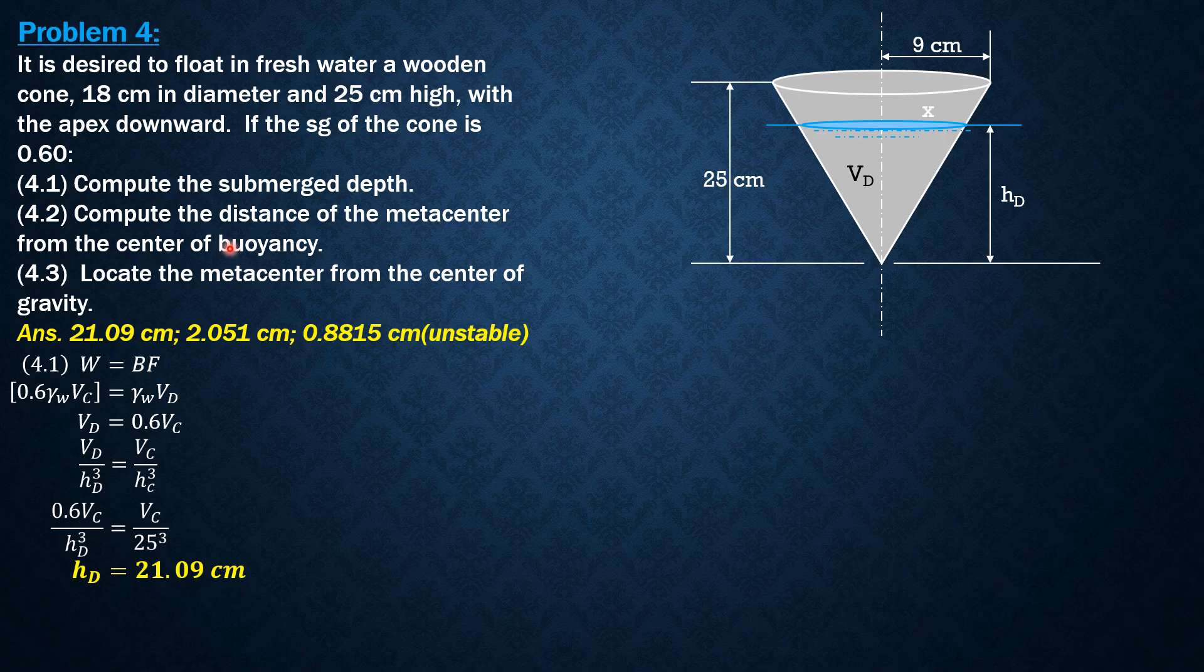For the distance of metacenter from the center of buoyancy, that's MBO, which is moment of inertia of the waterline section, which is a circle, over volume displaced. The center of buoyancy or centroid of the cone is three-fourths of HD from the apex, and the center of gravity is also three-fourths of the height of the cone from the apex. You should know that from geometry or from integral calculus.